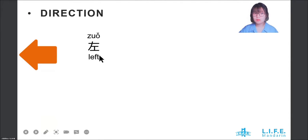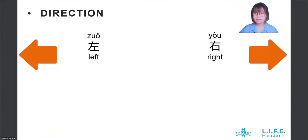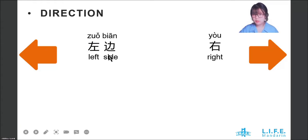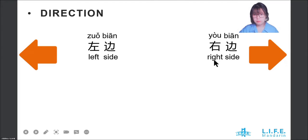左 (left), 右 (right). When we use 左 and 右 to describe direction, we usually add the word 边 after them. So 左边 means left side, and 右边 means right side.